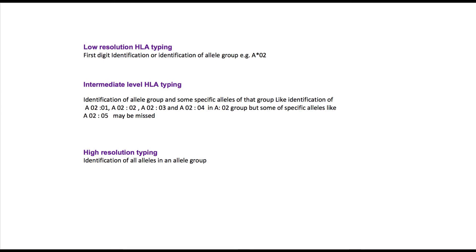During HLA typing, when alleles are assessed by molecular methods, different levels of resolution can be achieved. Low resolution typing identifies up to the first two digits — meaning only the allele group is identified, such as allele group A2 on the HLA A locus. This is usually equivalent to the HLA antigen identified by serology.